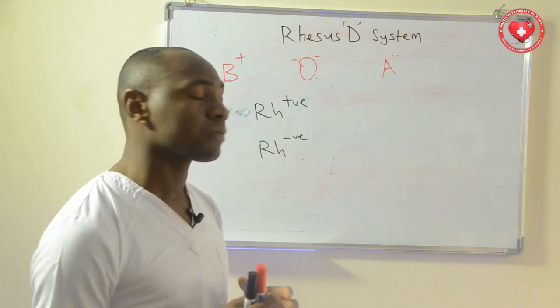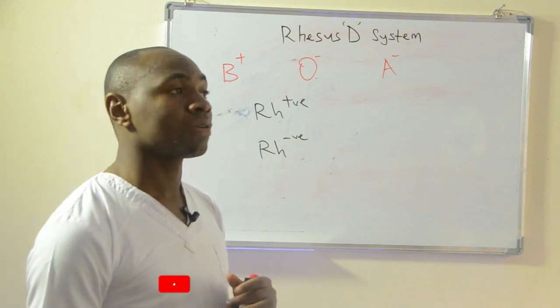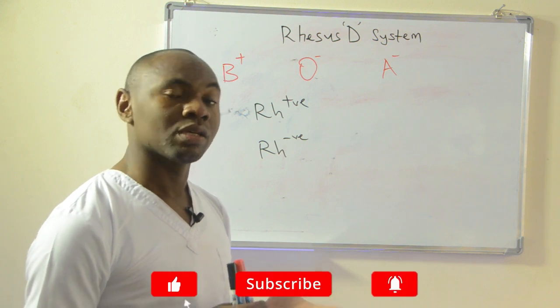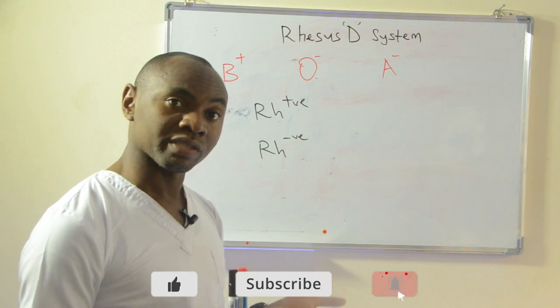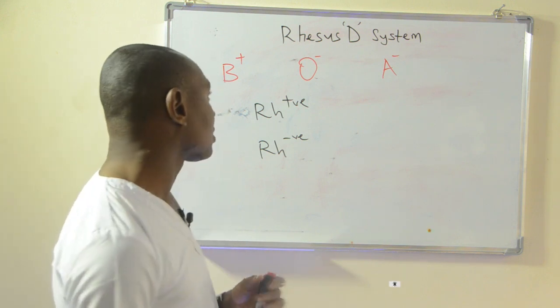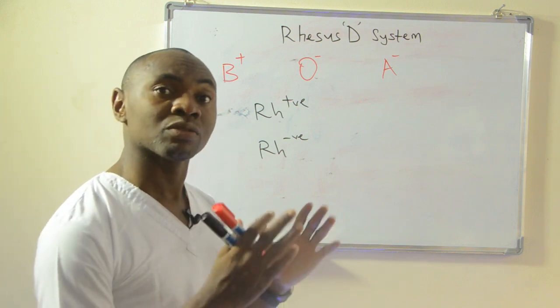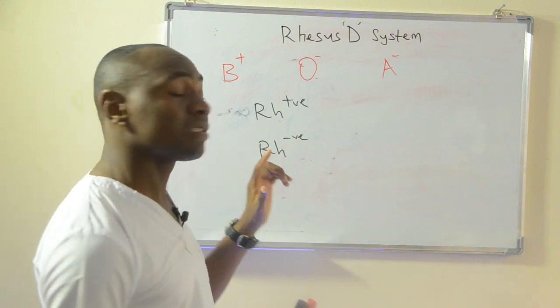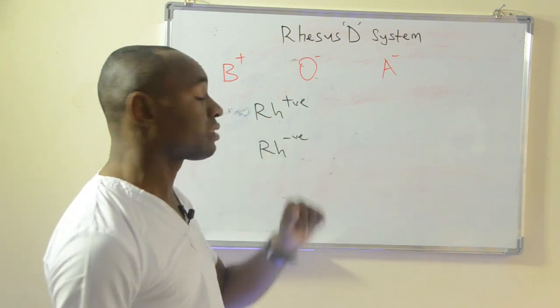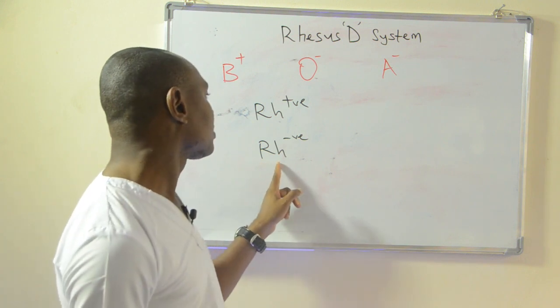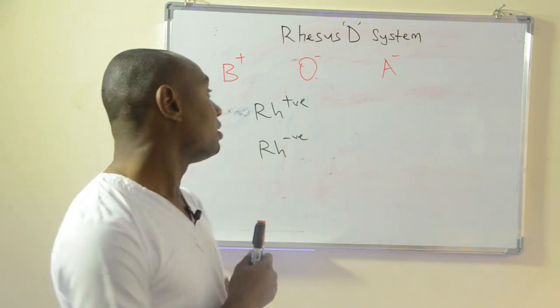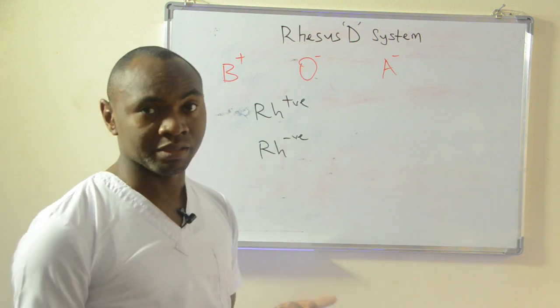In some individuals it is present, in some individuals it is absent. When it is present in a particular individual, that person is termed Rhesus positive. If it is absent, the person is termed Rhesus negative. It's also called Rhesus D and some people say D factor or some call it Rhesus factor.